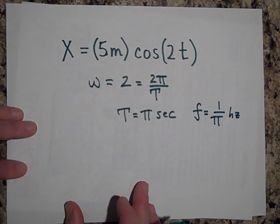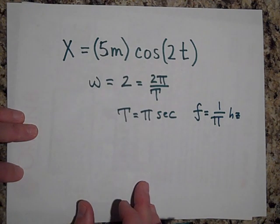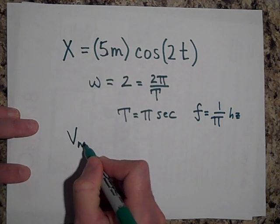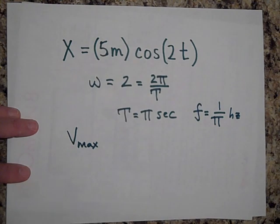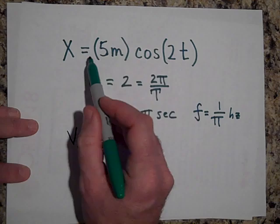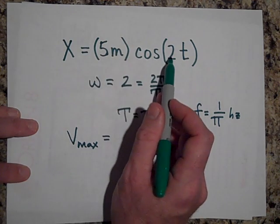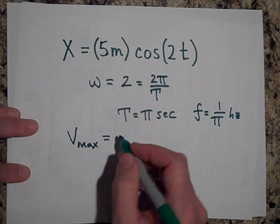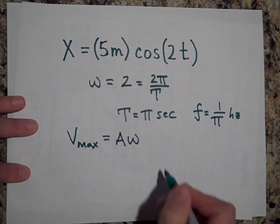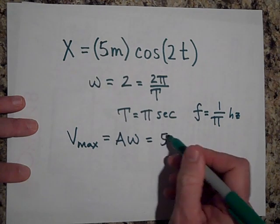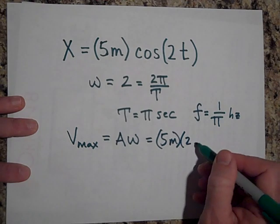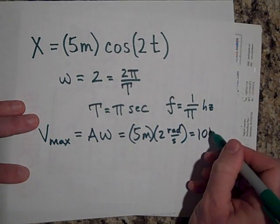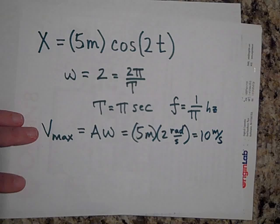Would you be able to tell me the maximum speed this object is going to reach in its motion? When you take the derivative of x, you get 5 meters times 2 — it's going to be Aω·sin(ωt) with a negative sign. So the maximum speed is Aω, which is 5 meters times 2 radians per second, giving you 10 meters per second. That's as fast as it's going to go.